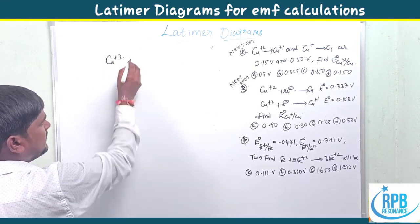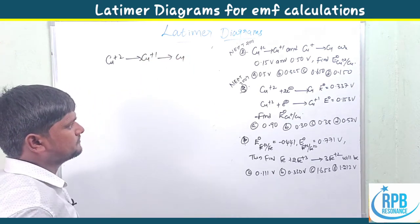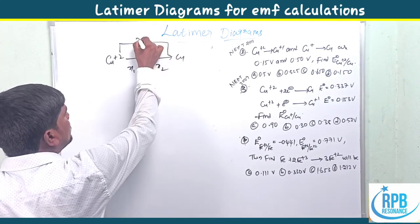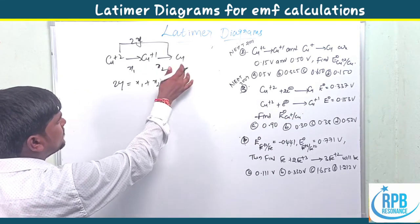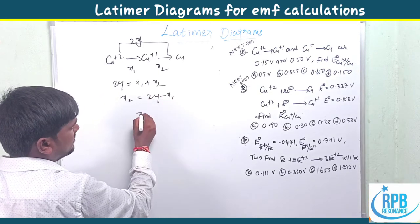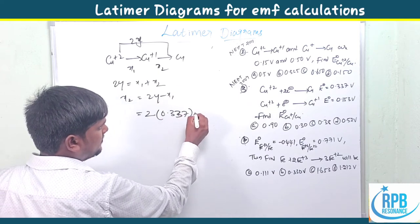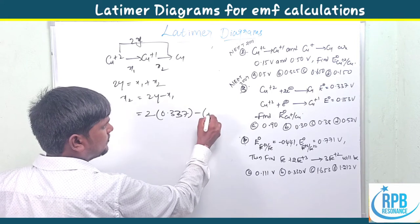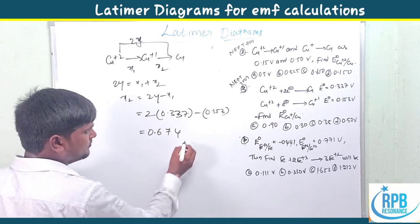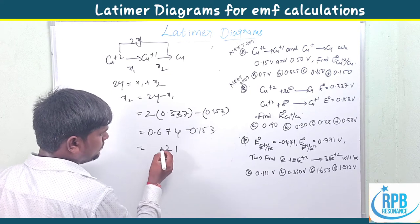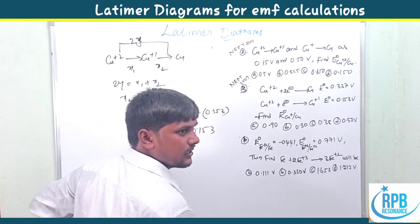Problem 3 (NEET): Again copper — Cu+2 to Cu+1 to Cu0. Using 2y = x1 + x2, so x2 (Cu+1 to Cu0) = 2y − x1. Given y (Cu+2 to Cu0) = 0.337 V and x1 (Cu+2 to Cu+1) = 0.153 V: x2 = 2(0.337) − 0.153 = 0.674 − 0.153 = 0.521 V. Option D is correct. These problems are very easy once you know the Latimer diagram approach.